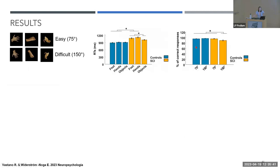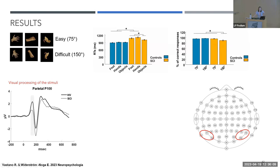In the behavioral results, spinal cord injury participants showed slower reaction times, particularly for stimuli that processed body information, while they were faster for non-body-related stimuli. We also found a tendency toward reduced accuracy only for the difficult 150-degree rotation.